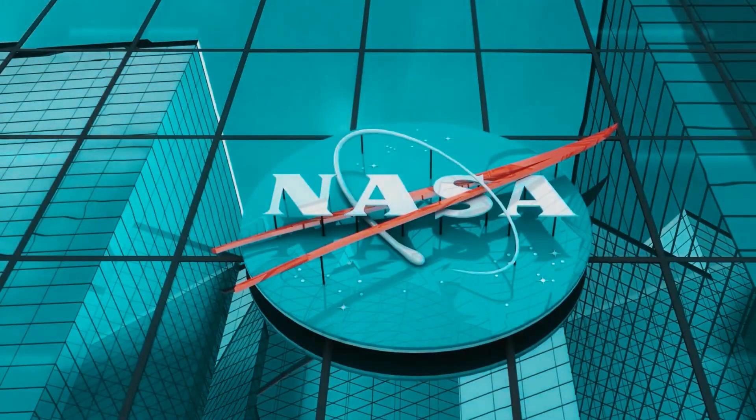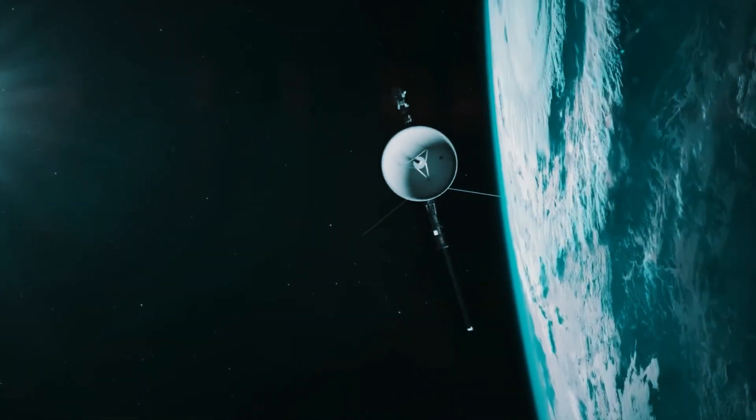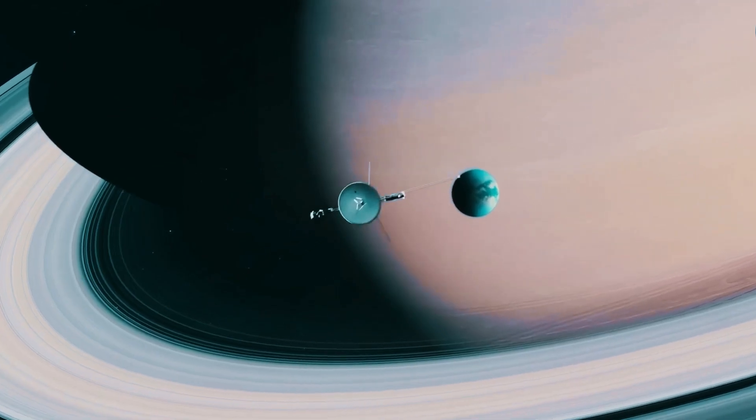In July, NASA scientists shared a very surprising piece of news with the public. They revealed that they had lost contact with Voyager 2.